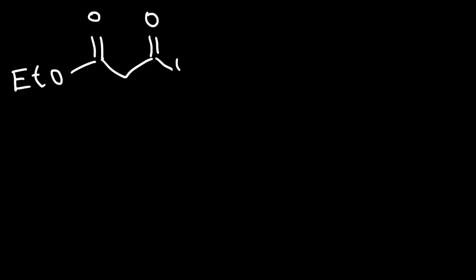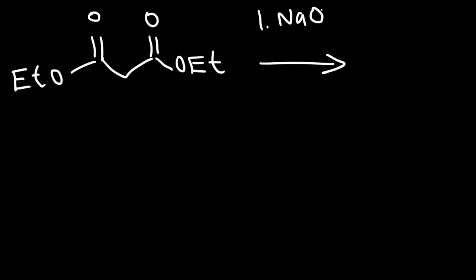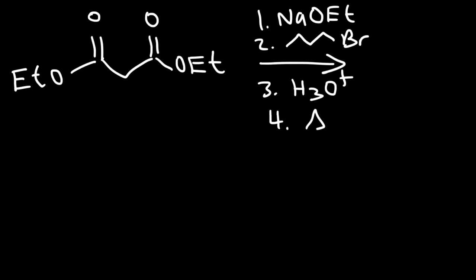Now let's work on this example problem. Go ahead and predict the major product of this reaction, and write a mechanism as well. In step one, we're going to use sodium ethoxide. In step two, we're going to react it with butyl bromide. In step three, H3O+. And then step four, we're going to heat the solution. Feel free to pause the video and work on this example.